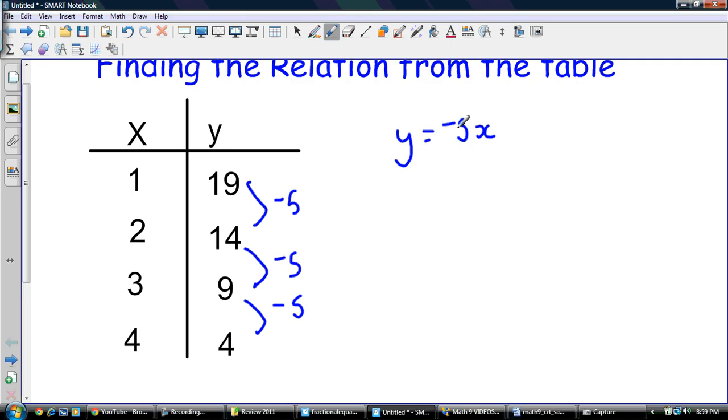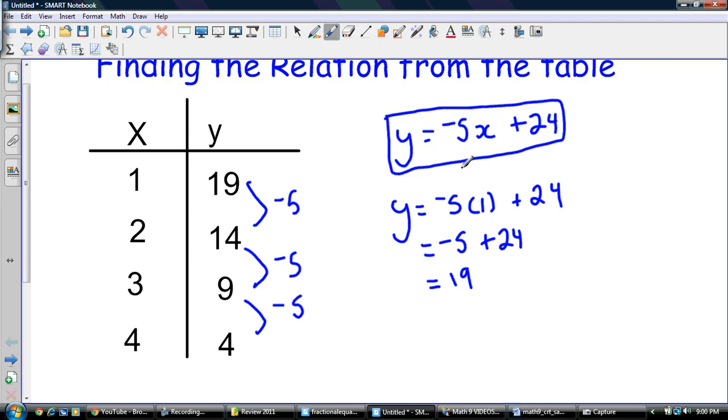Now that's not our relation for this table, because look, if x is 1, we get negative 5 times 1. That's equal to negative 5, but I need 19. So how do I get 19 out of that? Well, the way I get 19 is if I add 24. So negative 5 times 1 is negative 5 plus 24, which equals 19. So my relation here is y equals negative 5x plus 24.